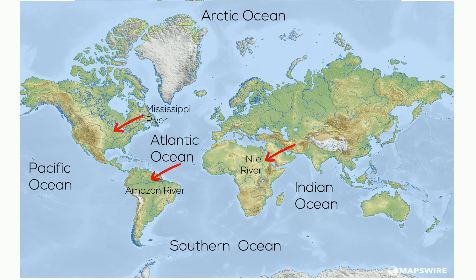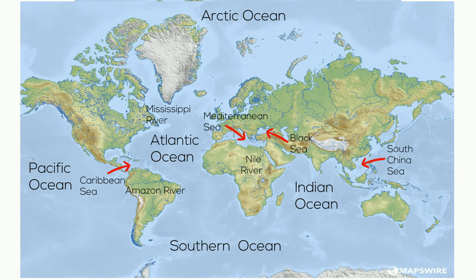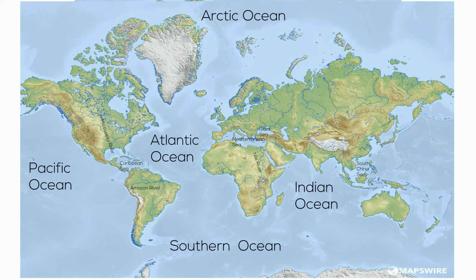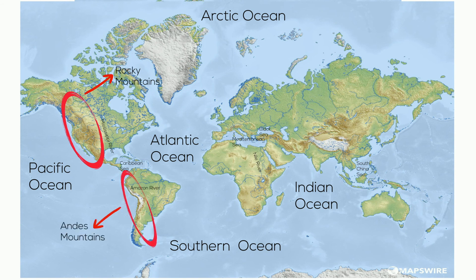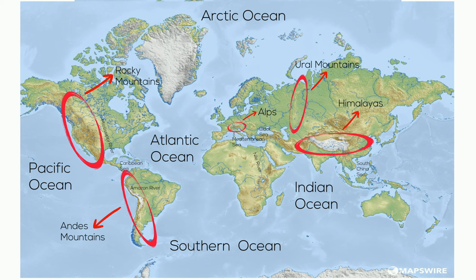We cannot forget about the seas: the Caribbean, the Mediterranean, the Black Sea, and the South China Sea. And the mountains — what color do you think the mountains are represented by? You are correct if you said brown and green. We have the famous Rocky Mountains in North America, and the long Andes Mountains in South America. We have the Alps in Europe, and the Himalayas in the Nepal region of Asia. The Euro Mountains are green because there are a lot of trees there compared to the other mountains.